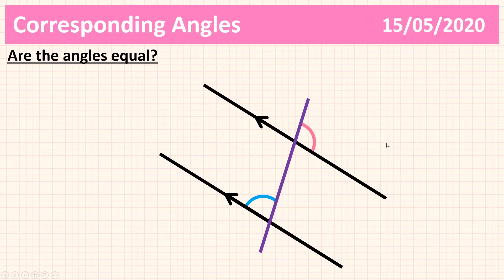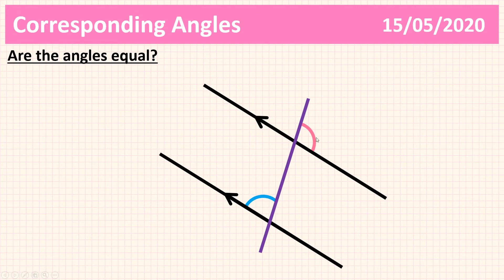What about this one? Pause the video — what do you think? Let's see which characteristics it fits. Do we have parallel lines? Yes, two black parallel lines. Do we have the angles on the same side of the transversal? No — one is on the left-hand side and one is on the right-hand side. The blue one's on the left and the pink one's on the right. So these angles are not corresponding, and therefore they are not equal.